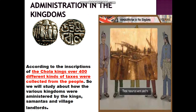Today we are going to continue our session with administration in the kingdoms. Here you can see coins and inscriptions. During the Chola kings, over 400 different kinds of taxes were collected from the people. We will study about how the various kingdoms were administered by the kings, samantas, and village landlords. These coins and inscriptions are the resources from which we can understand the administration in the kingdoms.